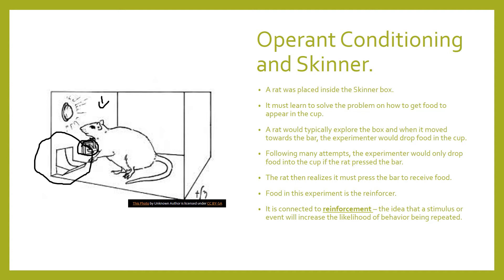A rat would typically explore the box, and when it moved toward the bar, the experimenter would drop food into the cup. Following many attempts, the experimenter would then only drop food if the rat pressed the bar. So the rat began to realize the food wasn't going to magically appear just by walking toward it — it needed to push the lever to receive food. Food in this experiment is the reinforcer, increasing the likelihood that the behavior of pressing the bar will be repeated.